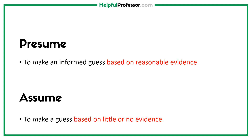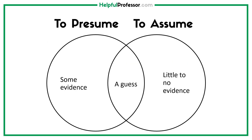We can look at this like a bit of a Venn diagram. Presume and assume both involve making a guess about something, but on the left-hand side, if we presume, we have some evidence, whereas on the right-hand side, if we assume, we have little to no evidence about something.